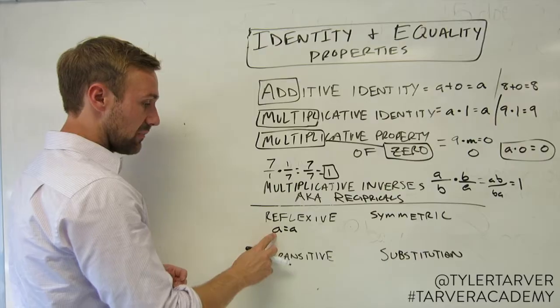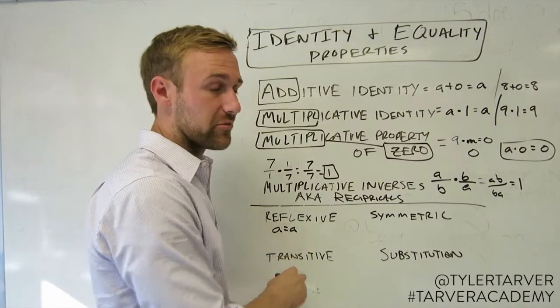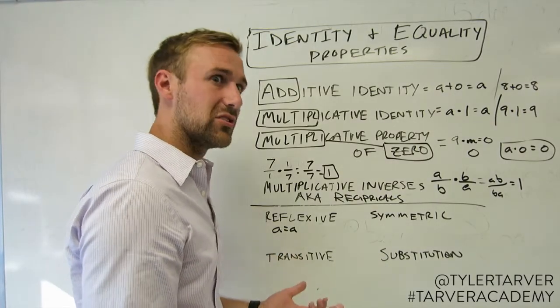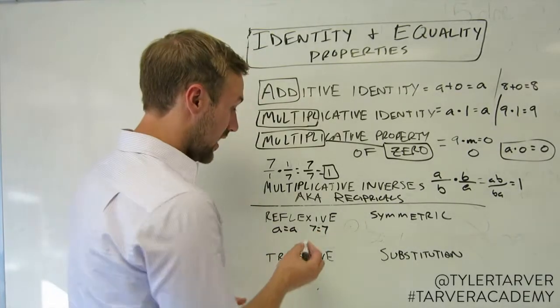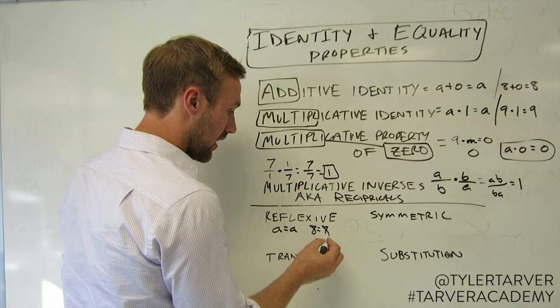Reflexive property means that something is always equal to itself. Super simple, but you will still have to use it. So that means that 7 is equal to 7. That's true. 8 is equal to 8.